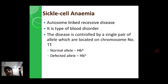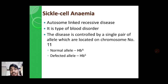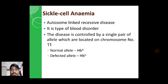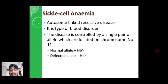The gene which gets defected — that is the recessive allele which gets defected — is present on chromosome number 11. We know that in humans there are 22 pairs of autosomes, and out of these 22 pairs, mainly these alleles are present on the 11th pair chromosome. Sickle cell anemia is controlled by two alleles, and the normal allele is represented by HbA.